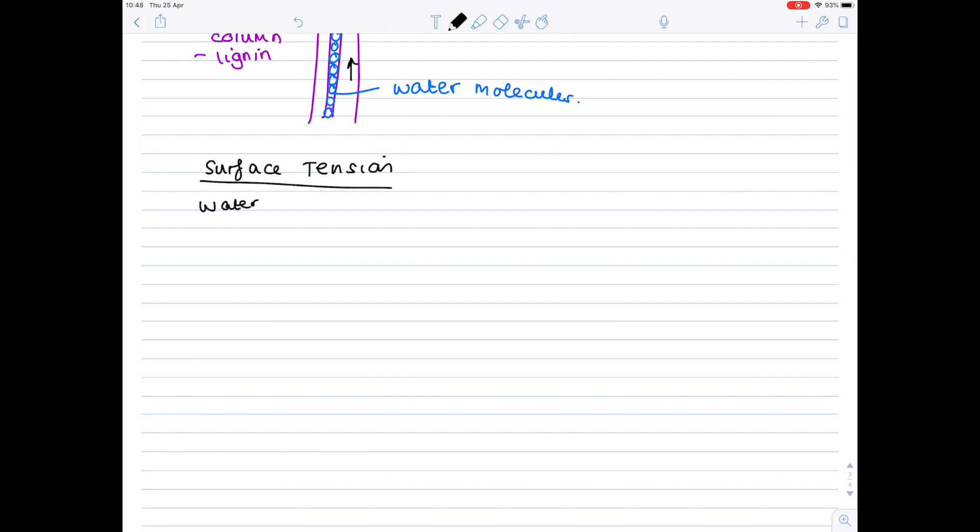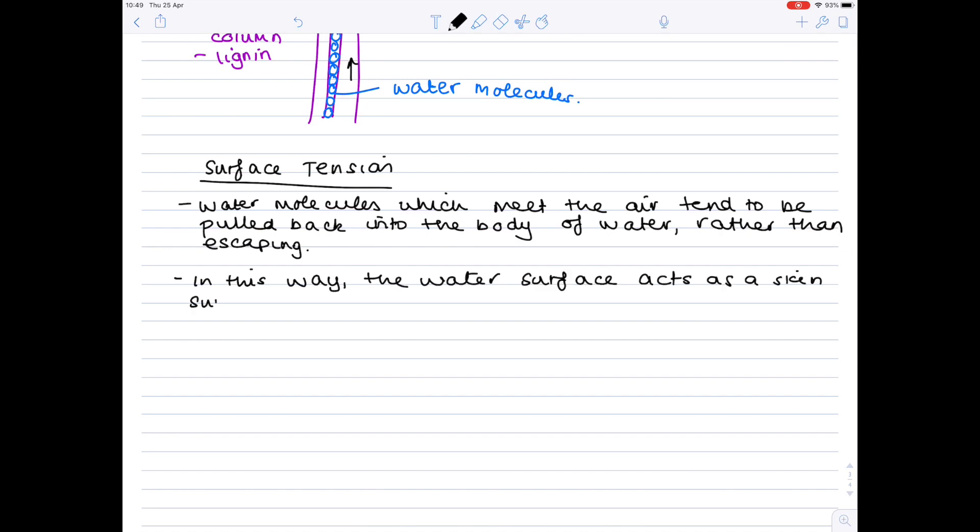So water molecules, which meet the air, tend to be pulled back into the body of water, rather than escaping. In this way, the water surface acts as a skin, supporting small organisms, such as pond skaters.